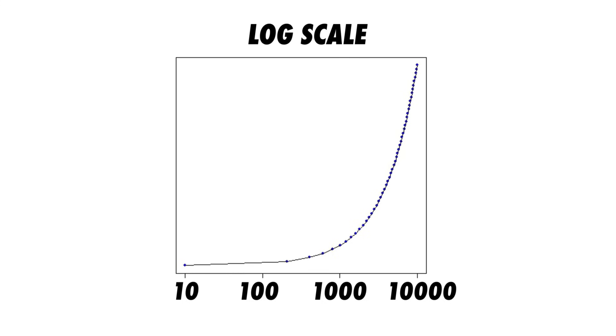In a logarithmic scale, each step has the same proportion. For example: 10, 100, 1000, 10,000 — where each step is a multiplication of 10.